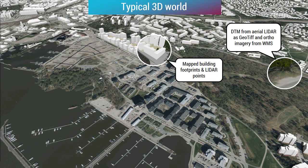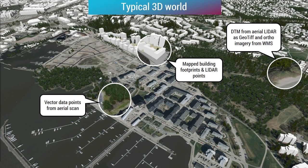Adding to that might be mapped building footprints in vector and LiDAR point clouds used to calculate the height of each building — or it could come from an attribute in that vector data — and then that building height is used to extrude each building to a certain height. Maybe you also have vector data points from an aerial scan where you know every tree insertion point with attributes telling which tree, which height, which diameter, and that places a generalized 3D model representing that data at that position.